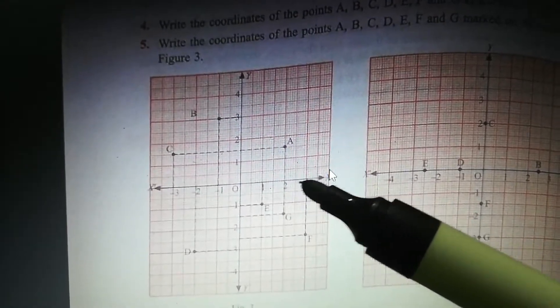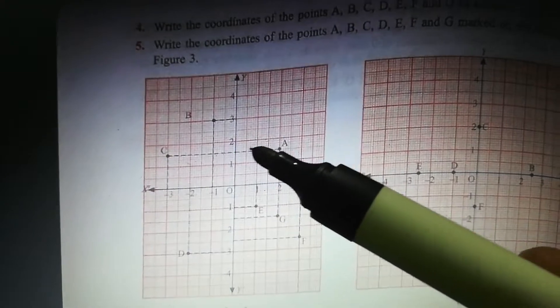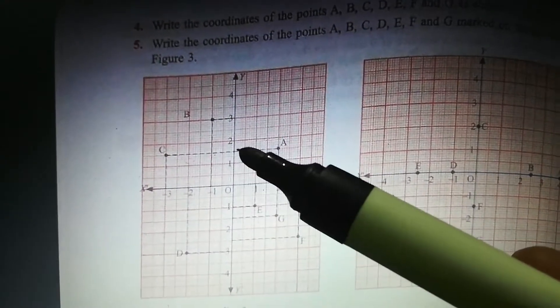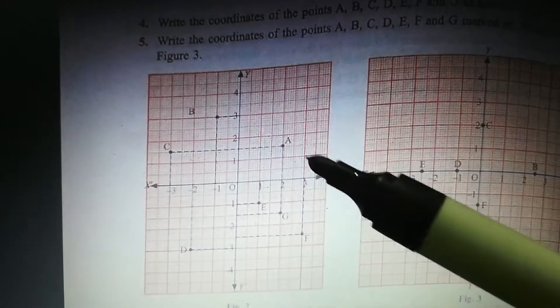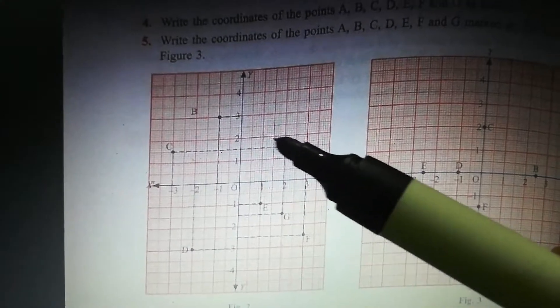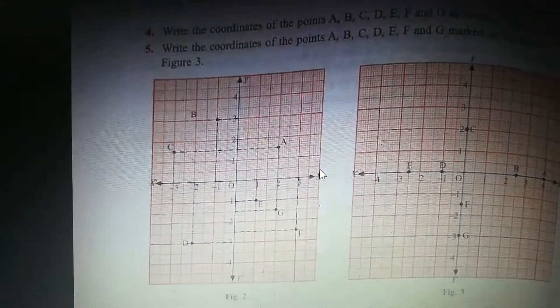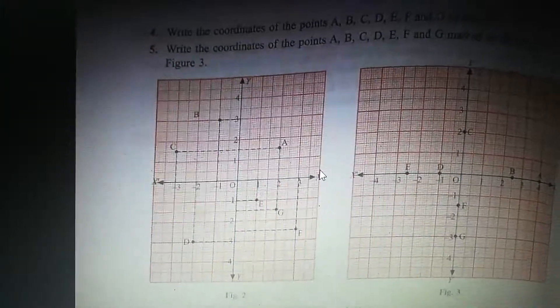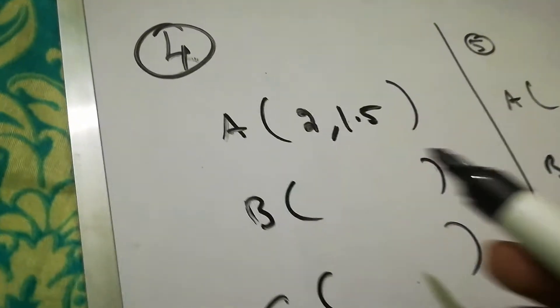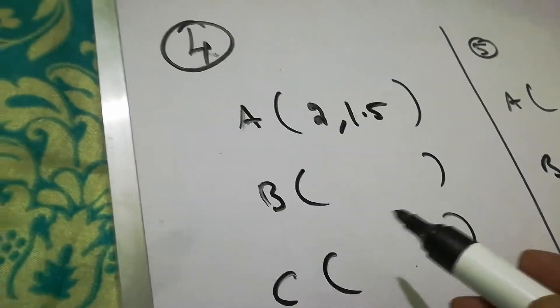So you can just see here first A. A is what point? You can just take it. X is 2 and Y is, it's going here to 1 and 2 middle, so it will come here 1.5. So the answer is 2 and 1.5. So A is 2 comma 1.5.